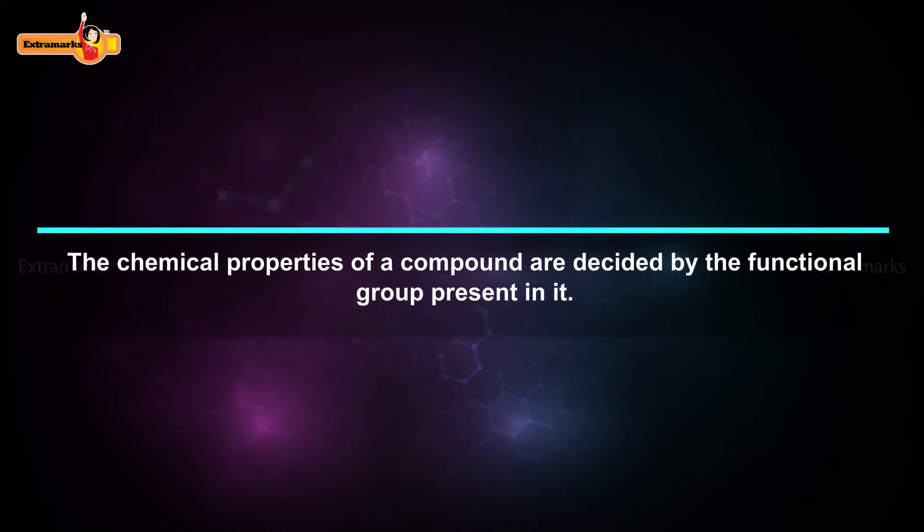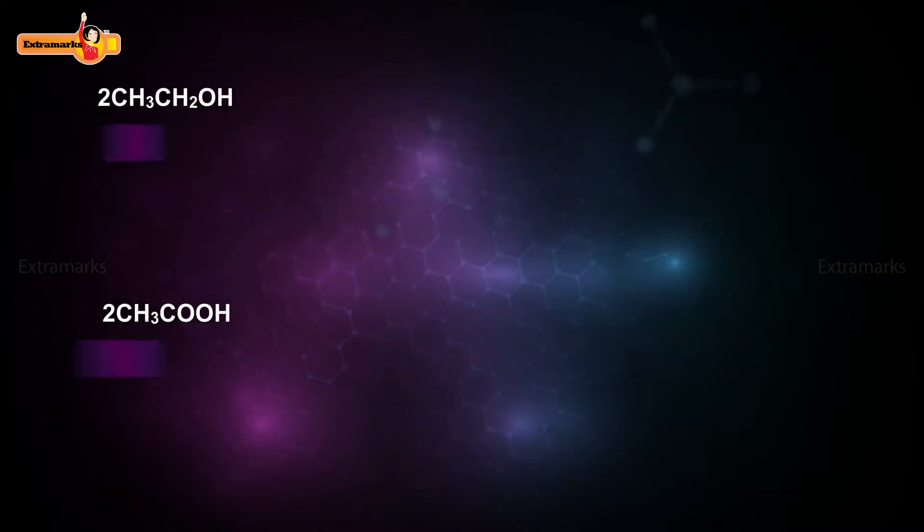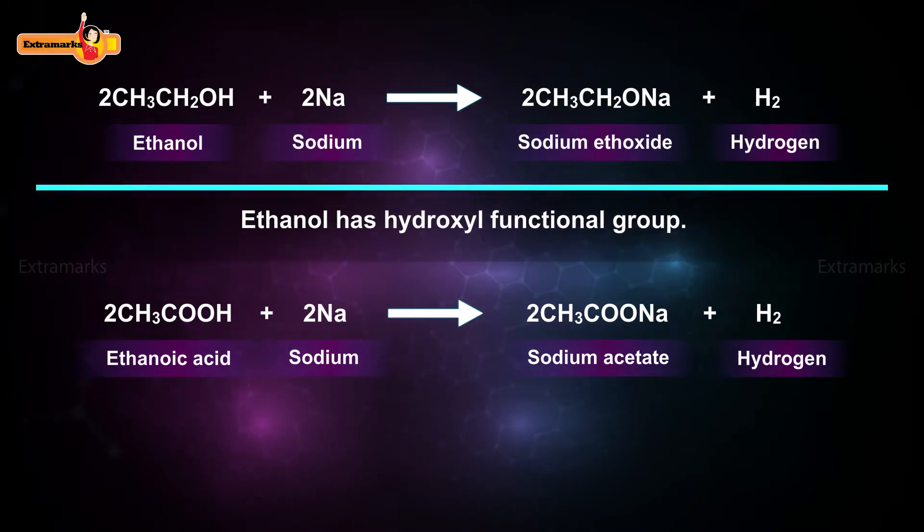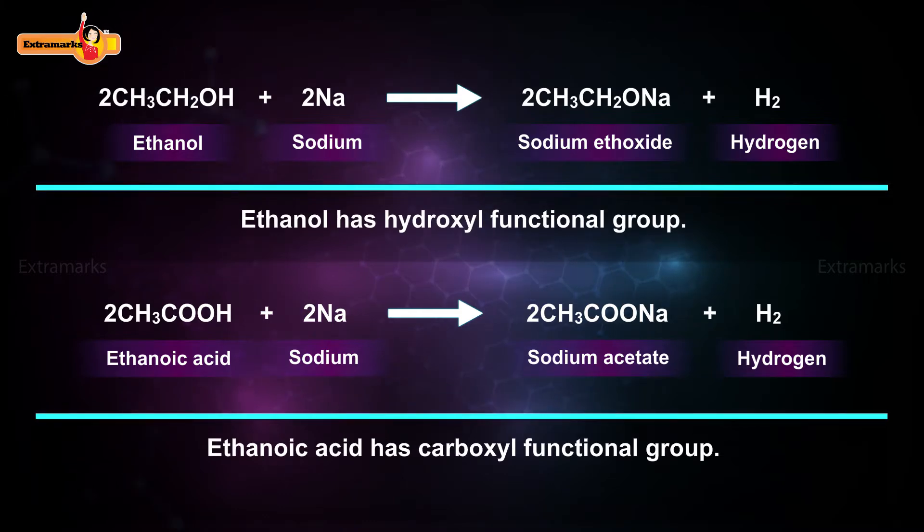The chemical properties of a compound are decided by the functional group present in it. For example, if ethanol and ethanoic acid react separately with sodium metal, different products are obtained due to the presence of different functional groups in them. Ethanol has hydroxyl functional group whereas ethanoic acid has carboxyl functional group.